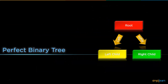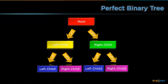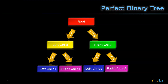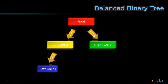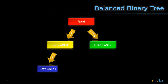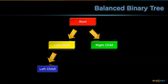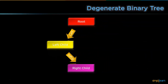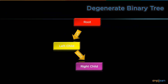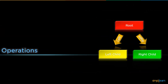A perfect binary tree is one where every node has two children and every leaf is on the same level. A balanced binary tree is one where, for each node, the height of the left subtree and the height of the right subtree differ by at most one. A degenerate binary tree is one where every internal node has only one child.